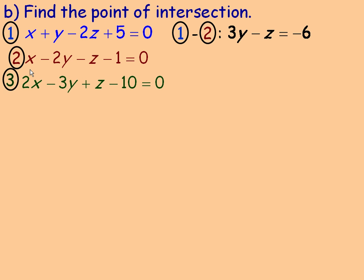Planes 1 and 2 both have a coefficient of 1 on x, so if I subtract them, x is eliminated. 1x - 1x = 0. Then y - (-2y) = y + 2y = 3y. And -2z - (-z) = -2z + z = -z. On the right side, 5 - (-1) = 6, so we bring that over as -6. That gives us equation 4: 3y - z = -6.